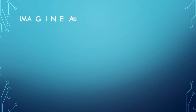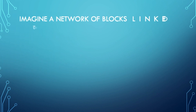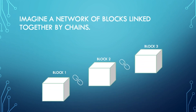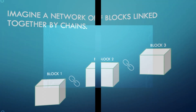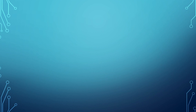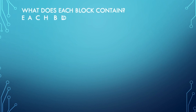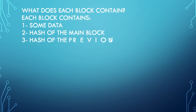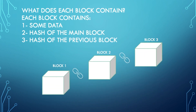Imagine a network of blocks linked together by chains. Here's an example of three blocks — Block 1, Block 2, and Block 3. Each block contains: one, some data; two, the hash of the main block; and three, the hash of the previous block.